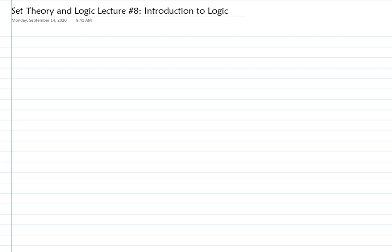One of the Bernoulli brothers proved that the harmonic series is divergent. That was first proven by Bernoulli — I don't remember off the top of my head which one, but I believe it was Johann.